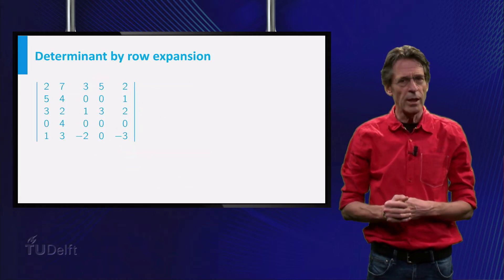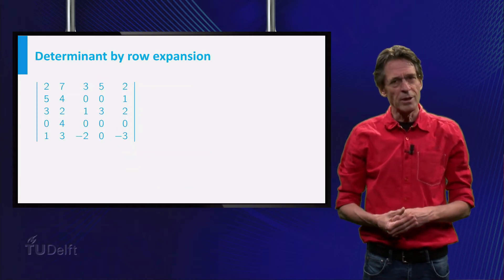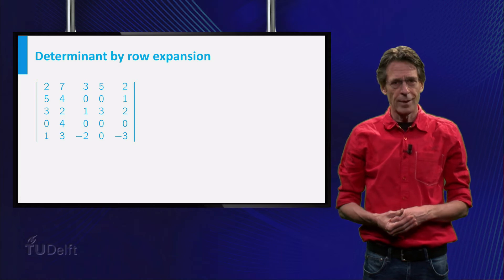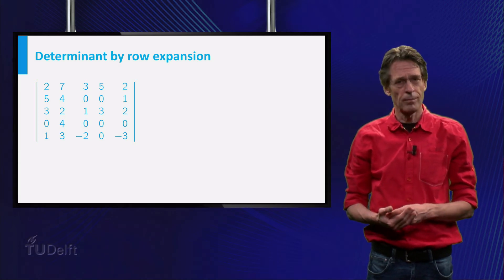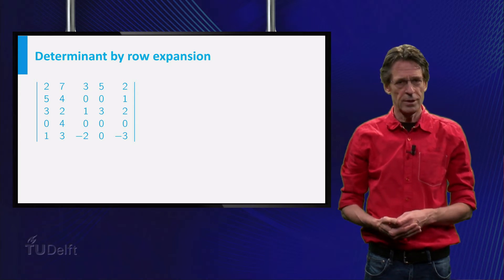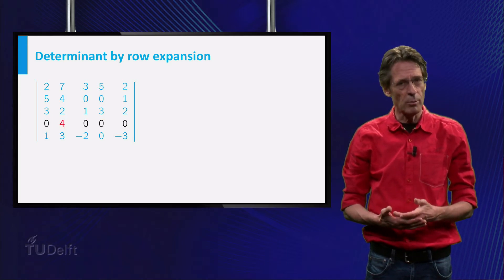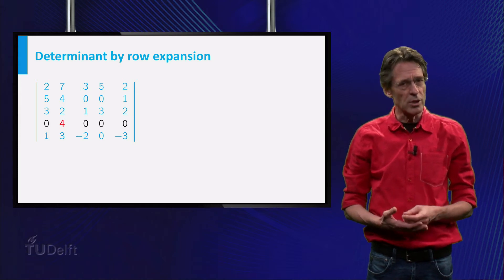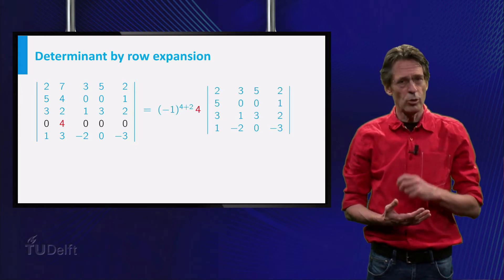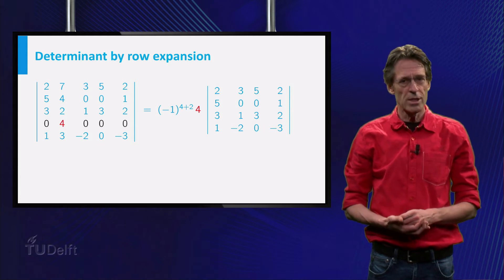For the given matrix A we could have done smarter by choosing a better row to expand. I guess you can see which is the best choice. It is the fourth row, of course, since that row contains the maximum number of zeros. After expanding across this row, we have only one 4x4 determinant to compute, instead of 5.